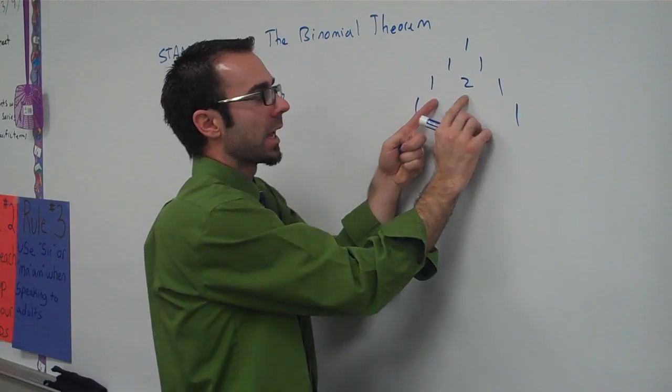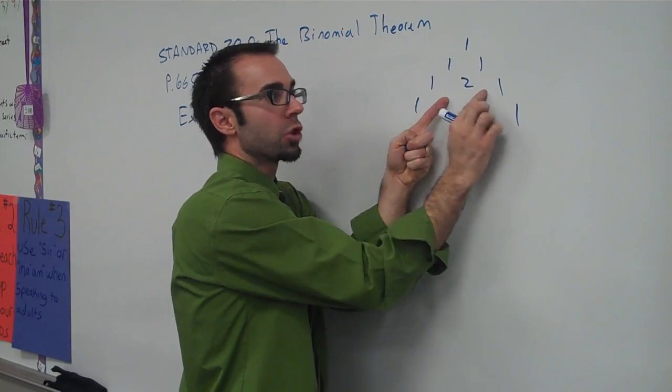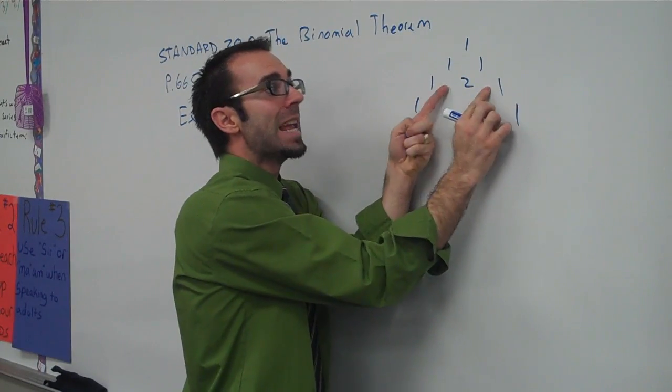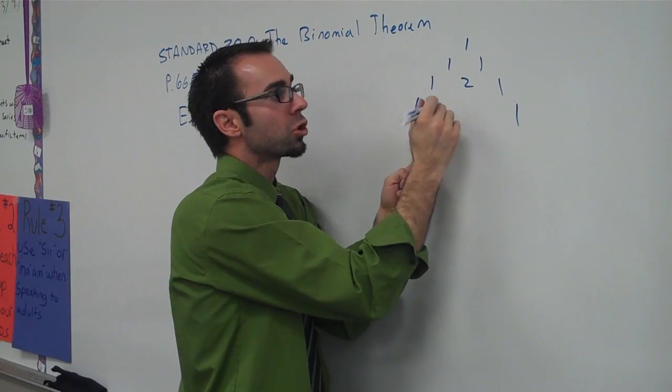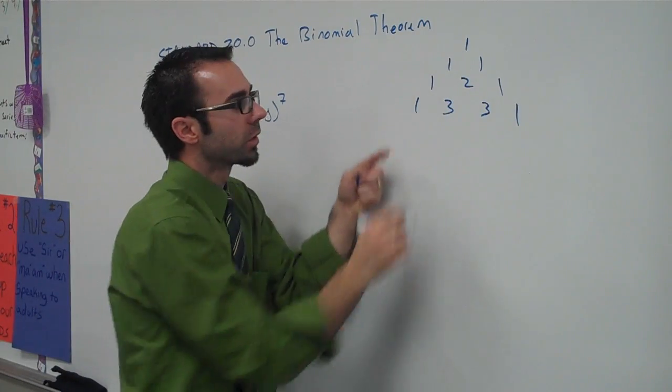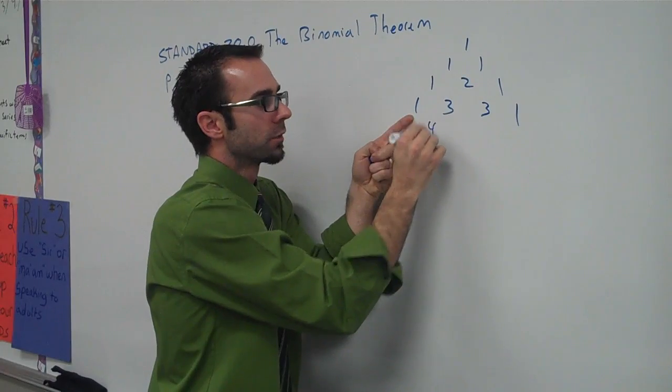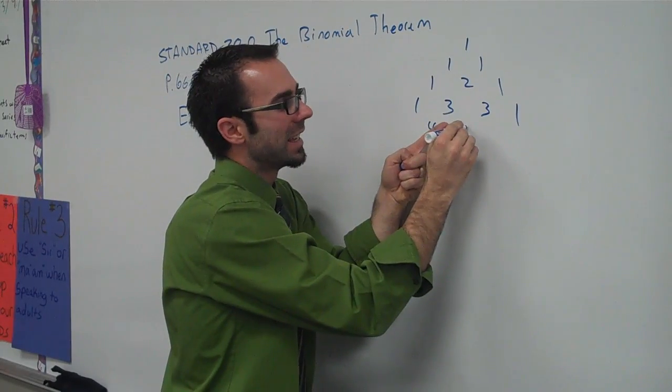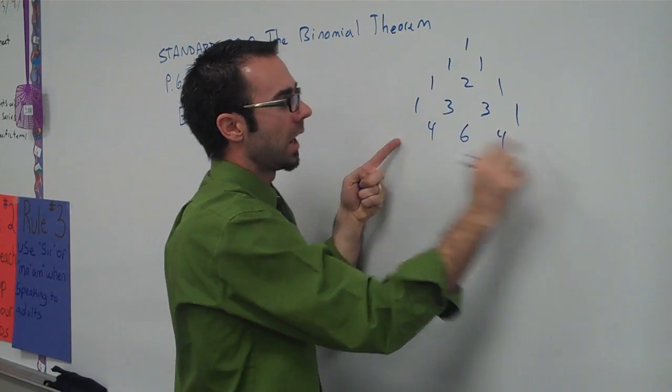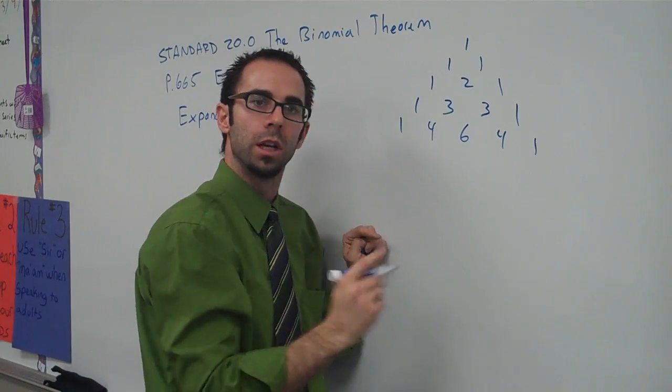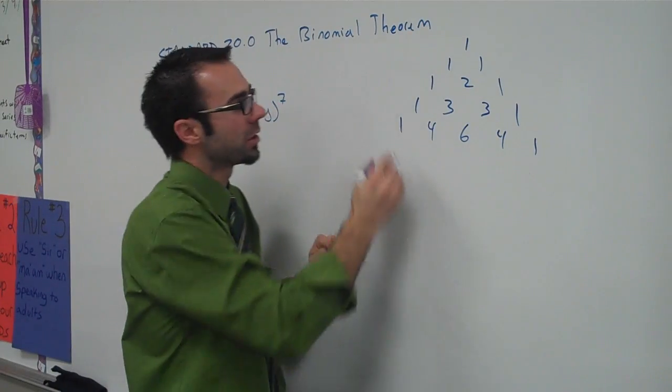And then we can keep going with this pattern. One's going on the outside, but then how do we know what's going to go here? Because there's always going to be a number in between every gap. So one plus two is three, two plus one is three right there. And then one plus three is four, three plus three is six, three plus one is four, and then you put your ones on the outside.